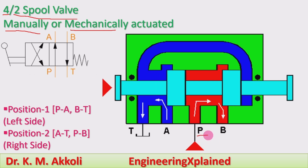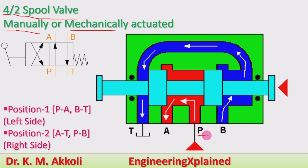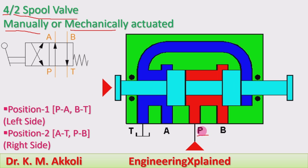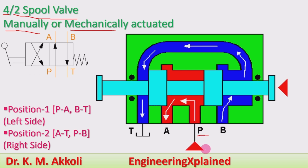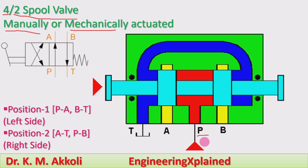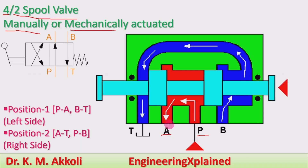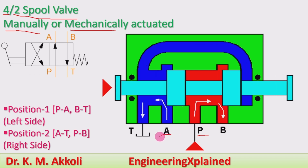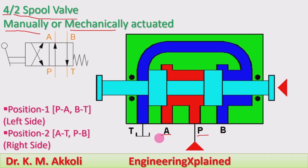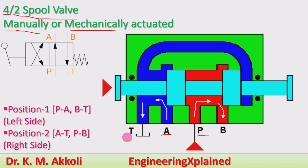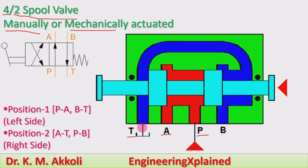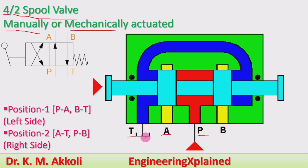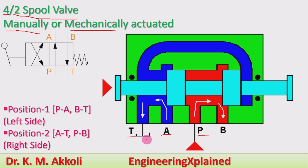The first port is the pump port — the line connecting to the pump. The filled arrow symbol represents the pump. The second port is the actuator port — the line connecting to the actuator during the working stroke. The third port is the tank port — the line through which fluid flows back to the tank.